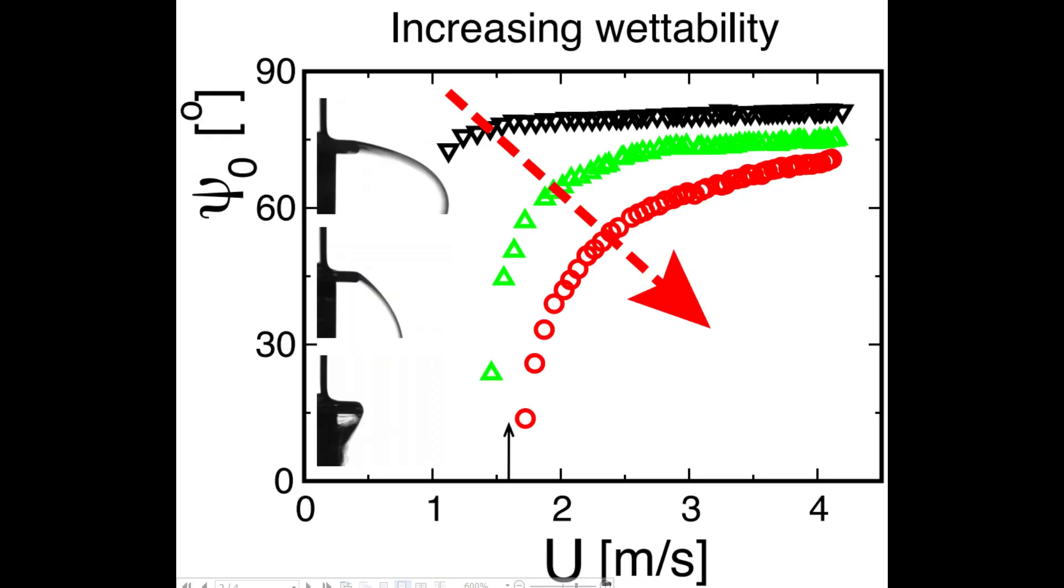This graph shows the dependence of the deflection angle on the flow rate of the fluid. The big red arrow shows the increase of the wettability of the used spout. So the black curve corresponds to the least hydrophilic spout, while the red curve corresponds to the most hydrophilic.